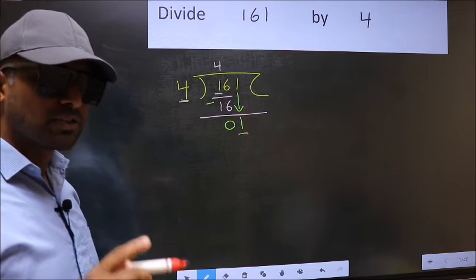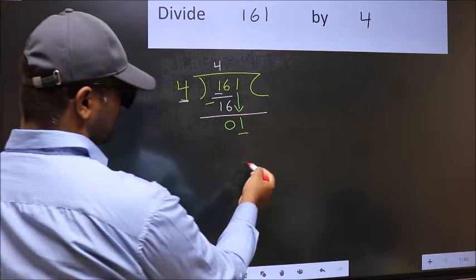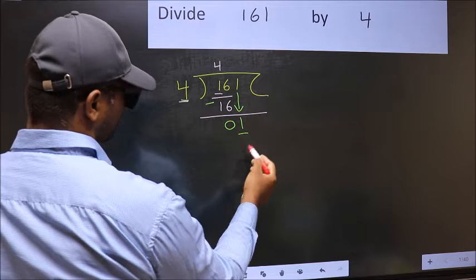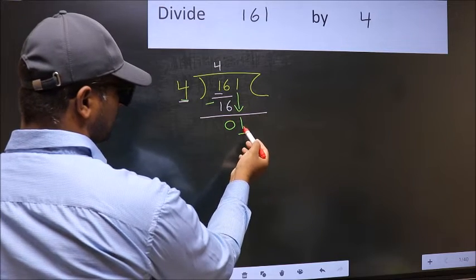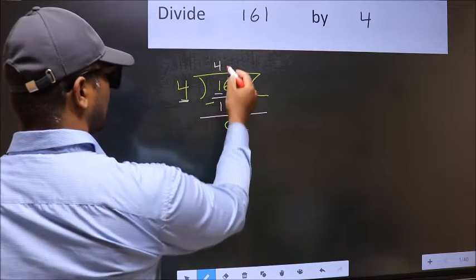Instead, what you should think of doing is: what number should we write here? If I take 1 here, I will get 4. But 4 is larger than 1. So what we should do is take 0.